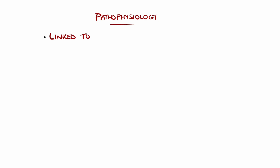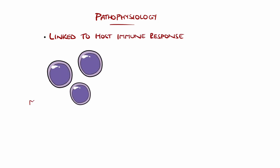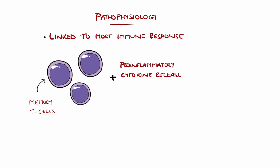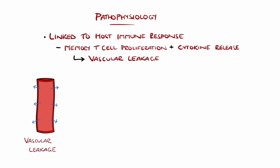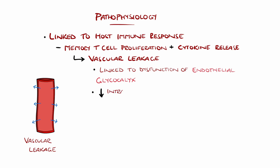The pathophysiology is thought to be linked to the host immune response. Proliferation of memory T-cells and pro-inflammatory cytokine production leads to vascular leakage, considered a hallmark of the more severe clinical syndromes of dengue hemorrhagic fever and dengue shock syndrome. This seems to be linked to dysfunction of the endothelial glycocalyx layer, a glycoprotein layer on the luminal surface of the endothelium that helps maintain homeostasis.